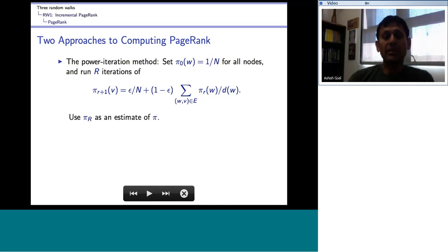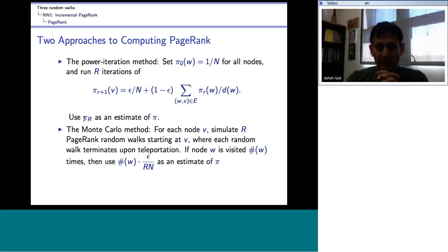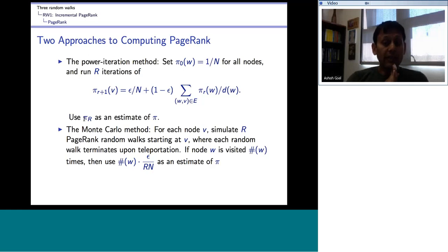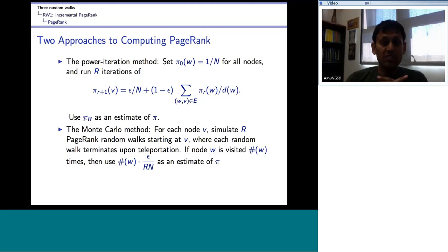The other method is Monte Carlo: for every node V we simulate R short random walks starting at V, where each walk terminates upon teleportation. We simulate R short random walks starting at every node V. If node W is visited hash(W) times, we use hash(W) * epsilon / (R * N) as an estimate of the page rank, which is an unbiased estimator since PageRank is the stationary distribution of the random walk. Generally R = O(log N) suffices for both the power iteration and Monte Carlo methods.